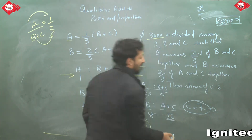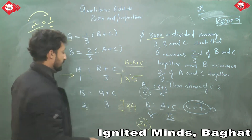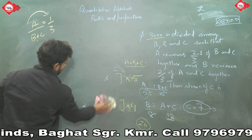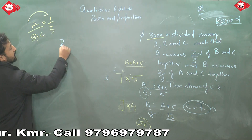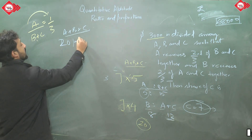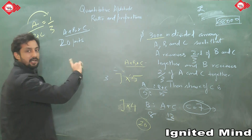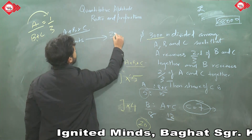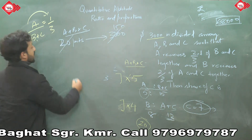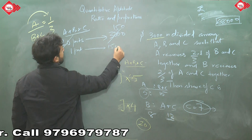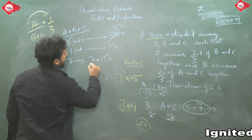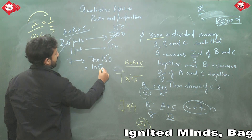A+B+C = 20 parts total = 3000 rupees, so 1 part = 3000 ÷ 20 = 150 rupees. Share of C = 7 parts × 150 = 1050 rupees. The answer is 1050.